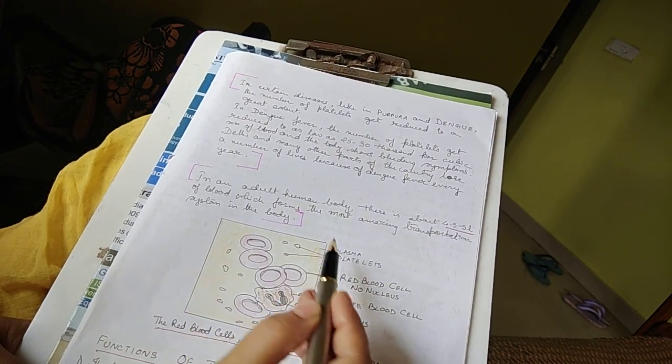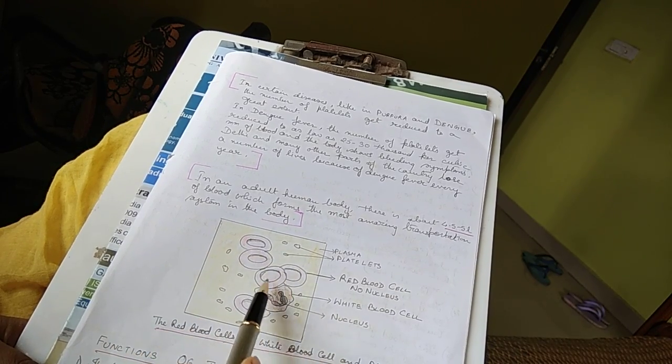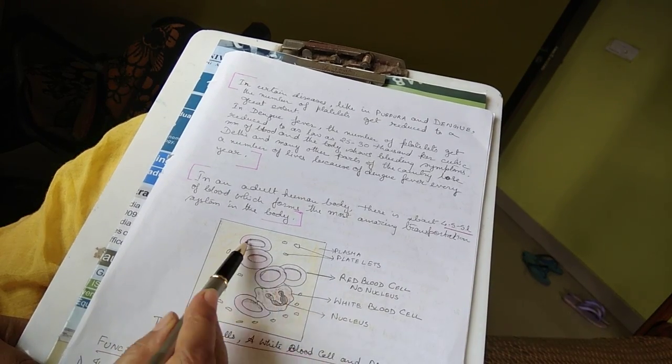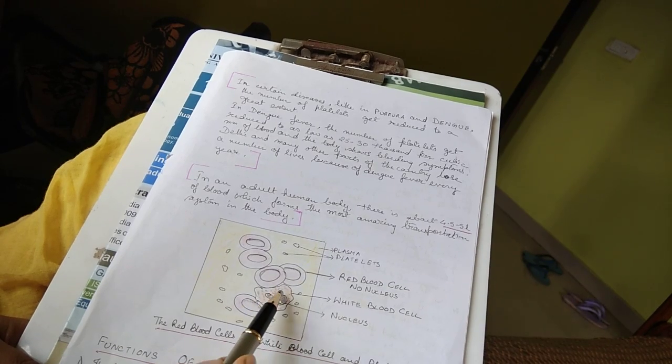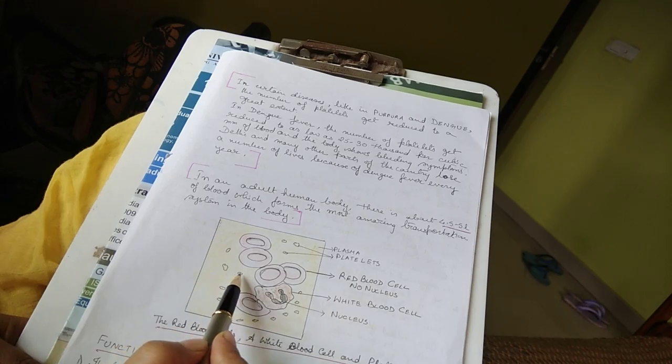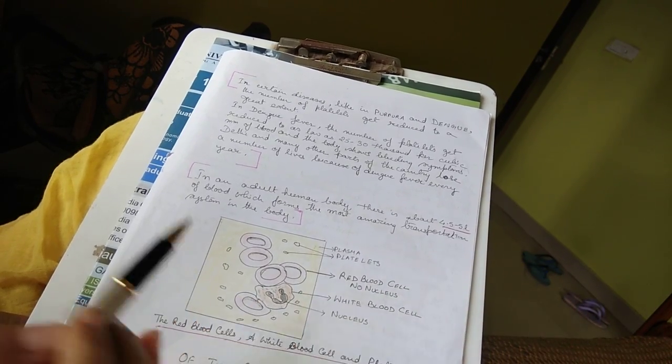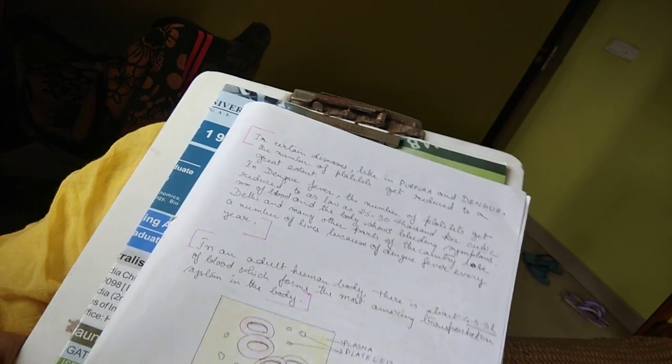This is the cellular diagram of the blood. These are the red blood cells, red color, without the nucleus. This is the white blood cells with the lobed nucleus, prominent lobed nucleus. And these small are the platelets. And this is the plasma. Yellowish color is the plasma.